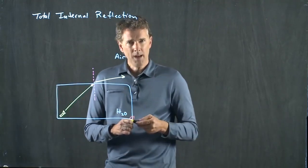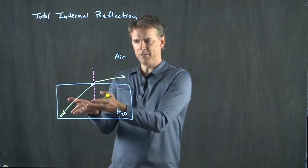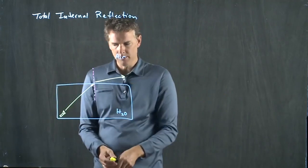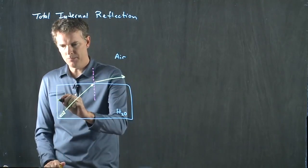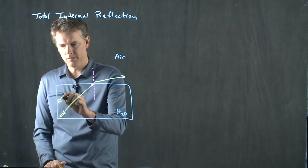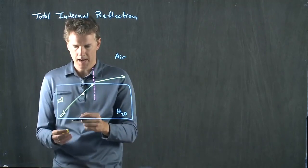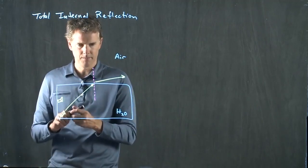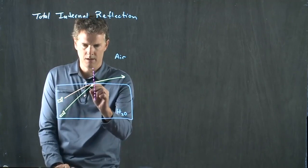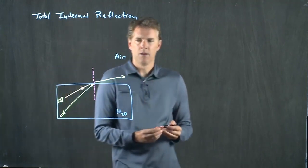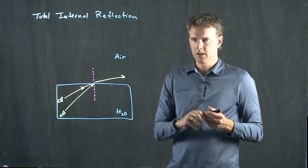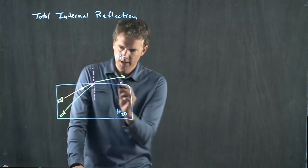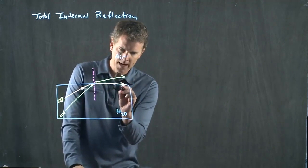But what happens when I start to increase this angle? In other words, let's move my flashlight up to this position. And now let's shine that ray at the surface, and I'll try to do it in a different color. Where is the light going to go? Well, it again bends away from the normal, and eventually it's going to go right along the surface.